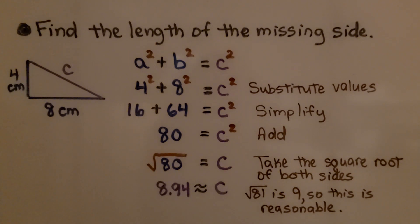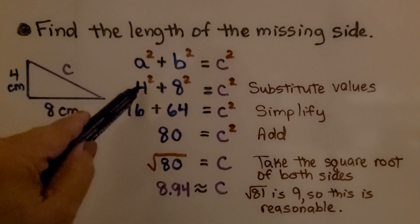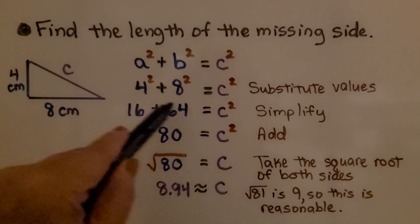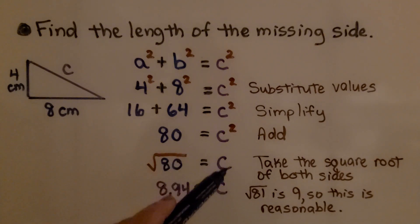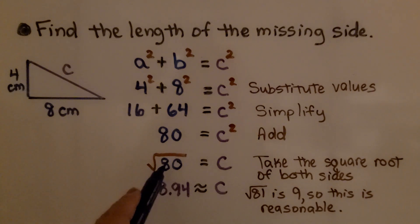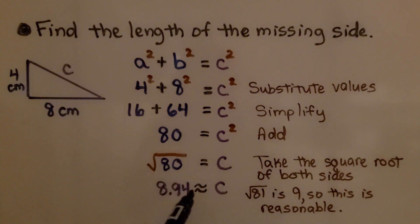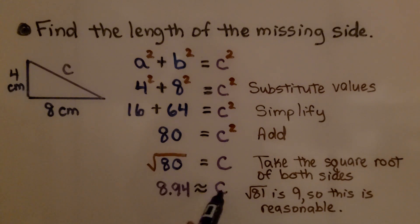This example involves decimals. We need to find the missing hypotenuse c, given legs of 4 cm and 8 cm. We calculate 4² + 8² = c², so 16 + 64 = 80 = c². Taking the square root of both sides, we need a number that squares to 80. Since 9 × 9 = 81, the answer is just under 9. Using a calculator, √80 ≈ 8.944, which we can round to 8.94 or 8.9. So c is approximately 8.94 centimeters.